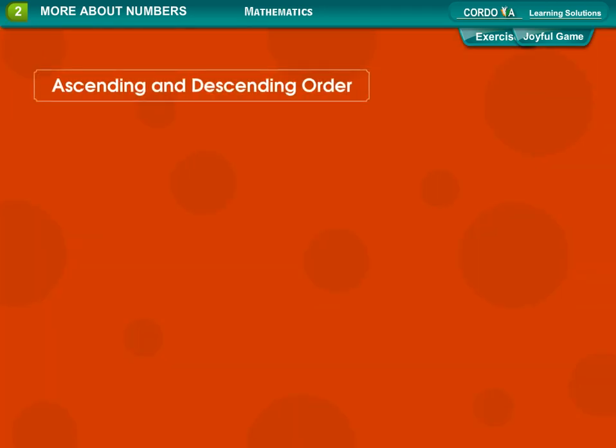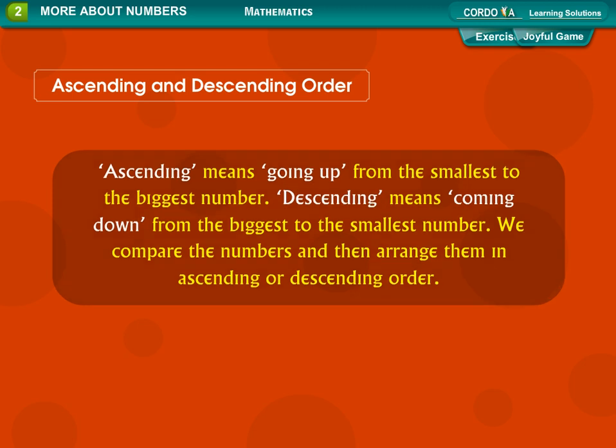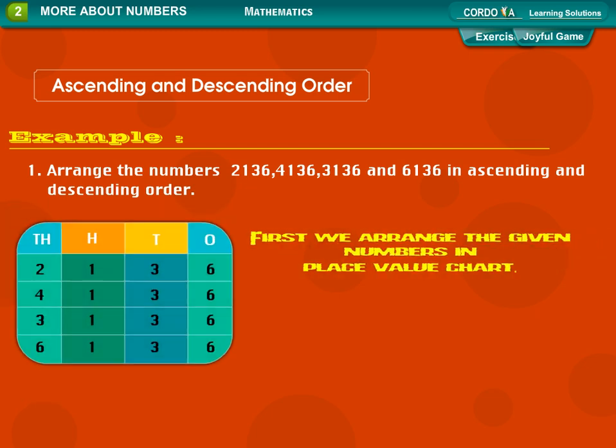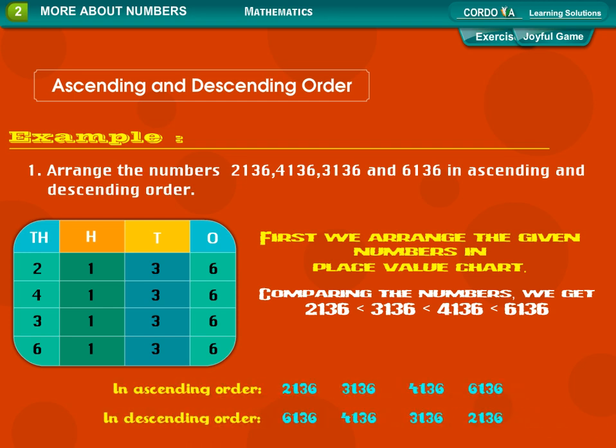Ascending and descending order. Ascending means going up from the smallest to the biggest number. Descending means coming down from the biggest to the smallest number. We compare the numbers and then arrange them in ascending or descending order. Example: Arrange the numbers 2,136, 4,136, 3,136, and 6,136 in ascending and descending order. First, we arrange the given numbers in place value chart. Comparing the numbers, we get 2,136 is less than 3,136, which is less than 4,136, which is again less than 6,136 in ascending order, and in descending order.